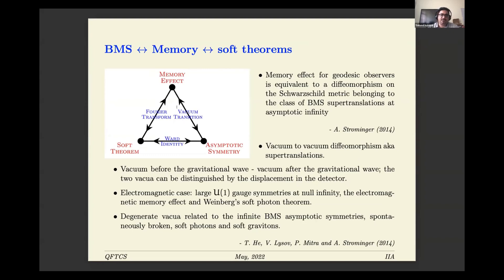The interesting part is that there is some initial vacuum and a later vacuum connected by what happens in the middle. In the memory effect, a gravitational wave passes between them. In asymptotic symmetry, you perform a diffeomorphism transformation on the metric — transforming a Minkowski metric to its asymptotically flat part at the boundary. Similarly, with soft theorems, soft particles have no energy, so you can transform from one vacuum to another without changing energy by adding so-called soft particles. This relation is not just for gravity.